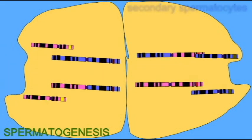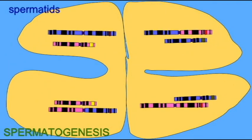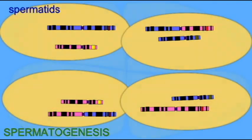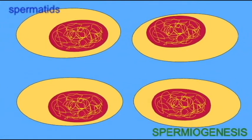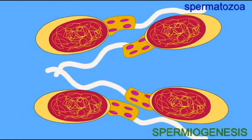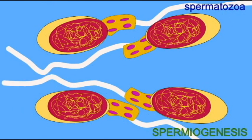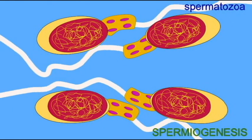Then, the primary spermatocyte which began meiosis divides into two secondary spermatocytes, and then into two haploid spermatids. The spermatids are haploid because they only have one copy of each chromosome. This process is known as spermatogenesis.